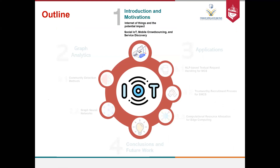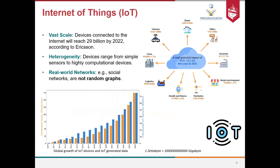Starting with the introduction and motivations, the Internet of Things is a well-known term in computer science. An important characteristic is that IoT is a vast-scale network including a lot of devices — it could reach around 29 billion devices connected to the Internet, according to Ericsson, in just two years from now.